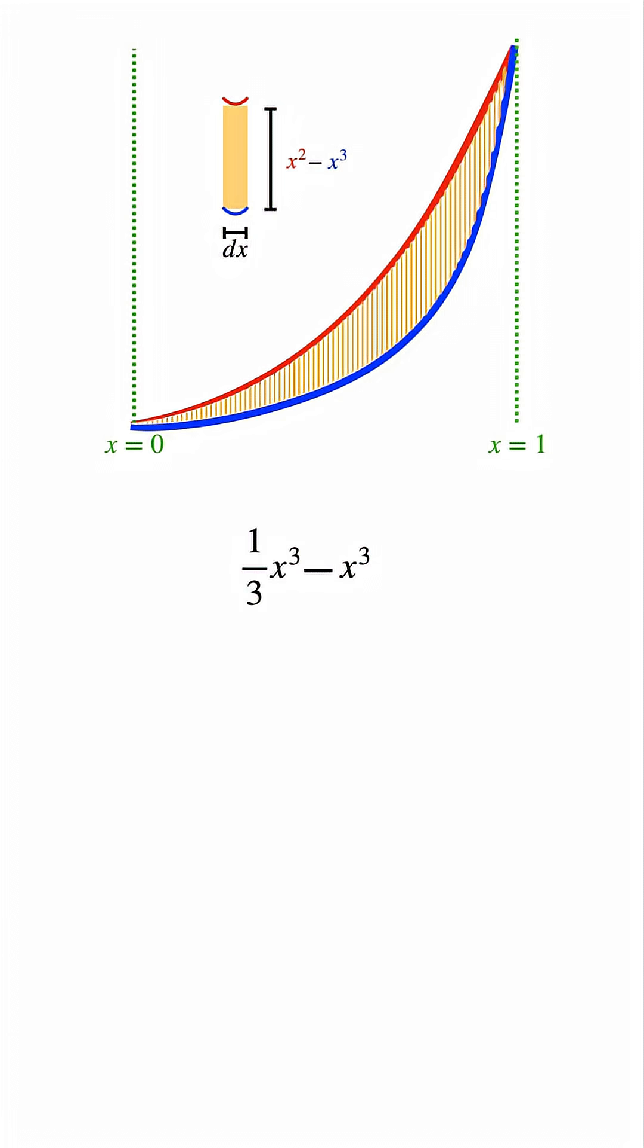When you integrate, x squared becomes one-third x cubed, and x cubed becomes one-fourth x to the fourth. Then evaluate it at one and zero, then take the difference. At one, you get one-third minus one-fourth, which equals one-twelfth. At zero, everything is zero.